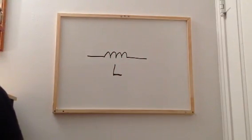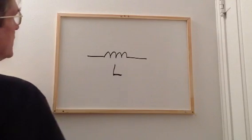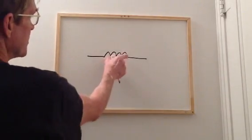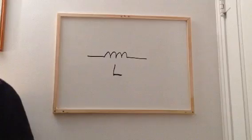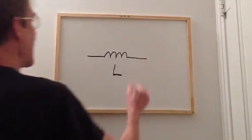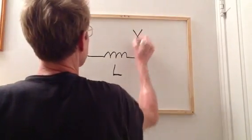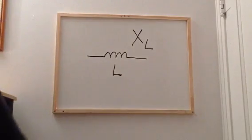and you run alternating current through it, you observe a small amount of resistance because of the wire in the coil, but you also observe reactance.